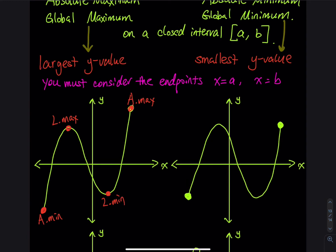Moving on to the graph on the right: the absolute max is right here — this is the highest y. This other point also has the same y value, so they are both absolute max. Since this point has a slope going up, then a horizontal tangent, then going down, you can call that both absolute max and local max. This will be an absolute min, and this other point is also both absolute min and local min.